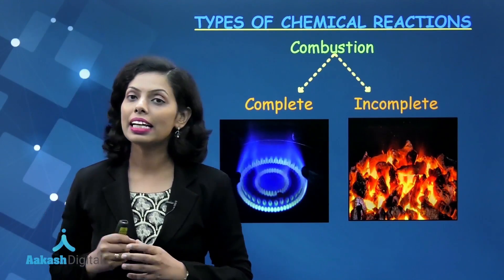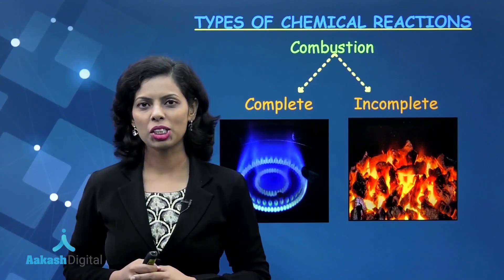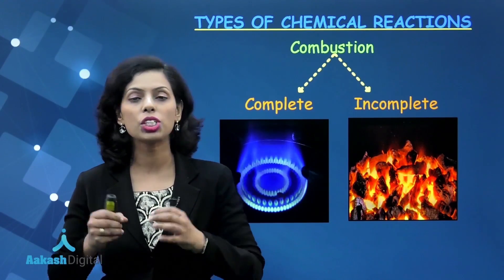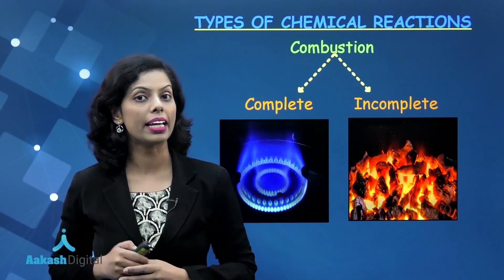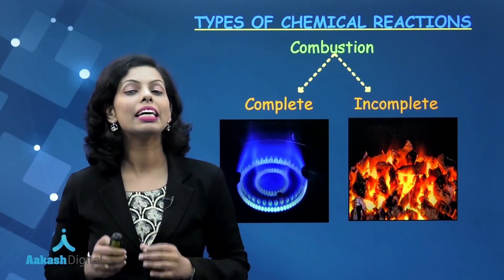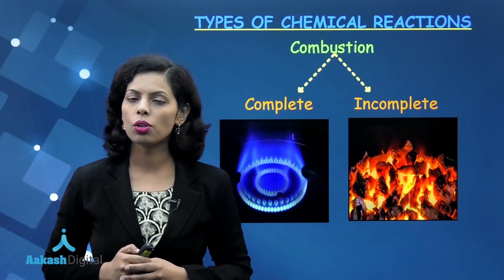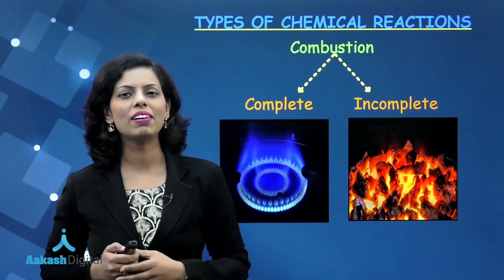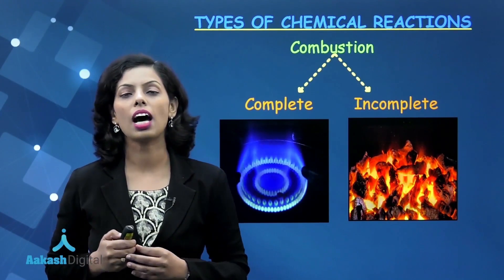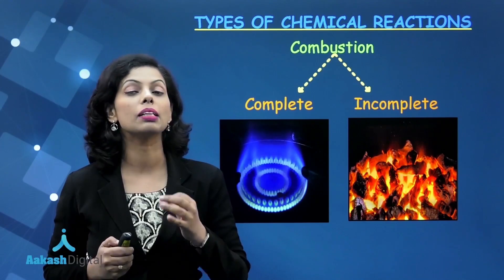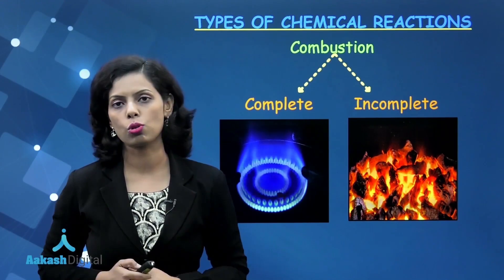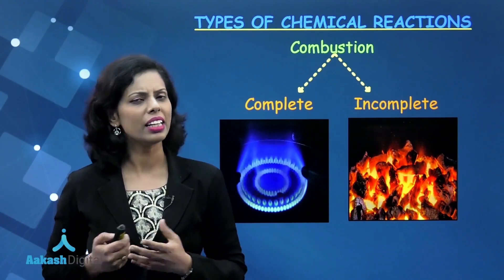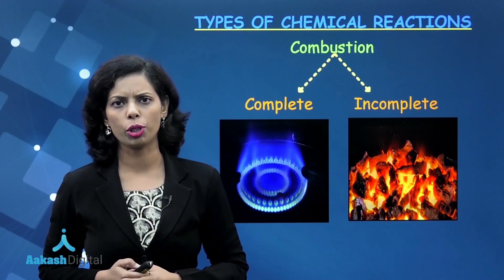The next one is incomplete combustion — a process of combustion in which sufficient oxygen supply is not there. That is why there is formation of carbon monoxide, ashes, and some unburned carbon. Along with that, energy is also produced.